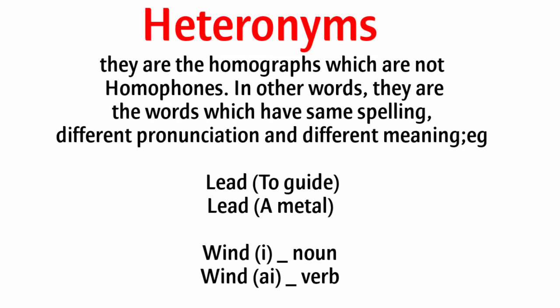Number three: heteronyms. They are the homographs which are not homophones. In other words, they are words which have the same spelling, different pronunciation, and different meaning. For example: lead — to guide; lead — a metal. Wind — a noun; wind — a verb.